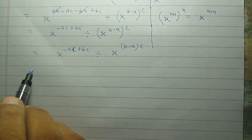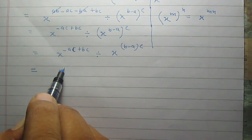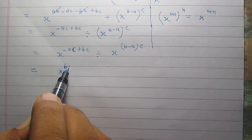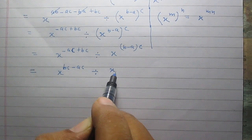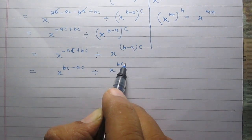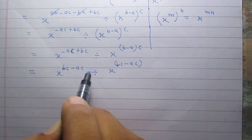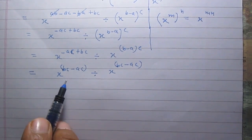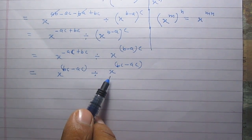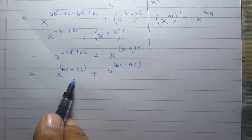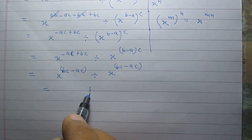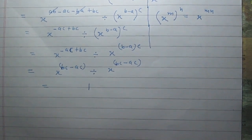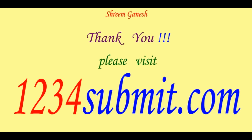Now, the first part as it is, I can write it as bc minus ac. Then, with the division sign, it is x raised to the power bc minus ac. We see that the first part and second part are both equal and they are dividing each other. So, obviously, the result is one. Thank you.